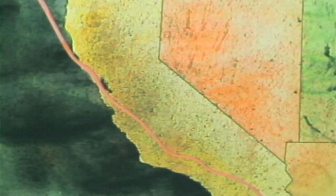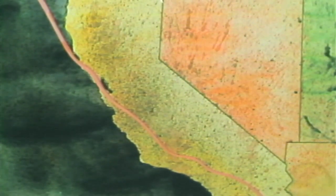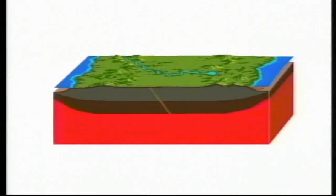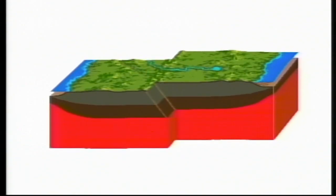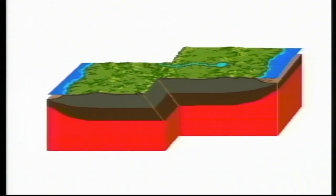That answer's good for 150 points. The San Andreas Fault, running through California, is a prime example of a transform fault. The Pacific Plate to the west and the North American Plate to the east are slowly slipping past one another in a horizontal motion. Strain builds up gradually as the plates push against one another until they snap and slip suddenly past each other, causing an earthquake.